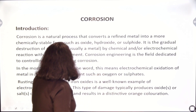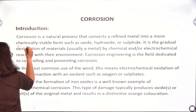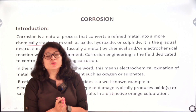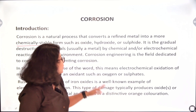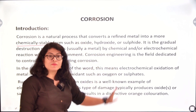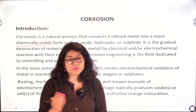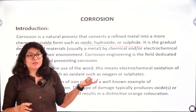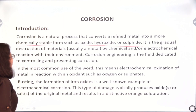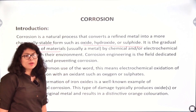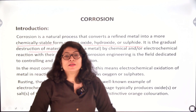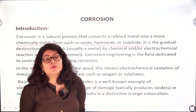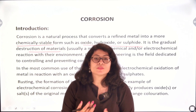Corrosion is a natural process that converts a refined metal into a more chemically stable form. Why chemically stable? Because iron alone is very reactive with air — it gets converted to its oxides, hydroxides, or sulphides very easily, but once the oxide or hydroxide or sulphide is formed, it no longer further reacts with any other substance. So in its oxide, hydroxide, and sulphide form, iron is present in a very stable form. It is a gradual, slow destruction — it takes years for an iron gate to get corroded.